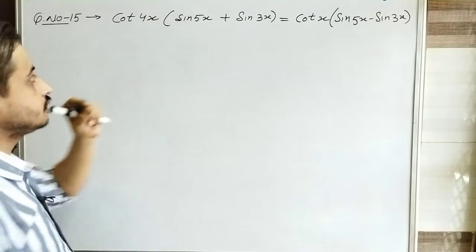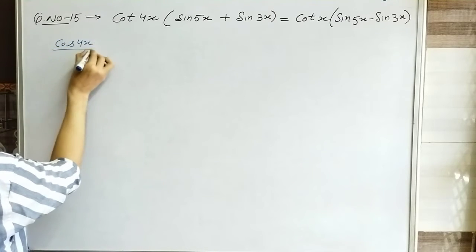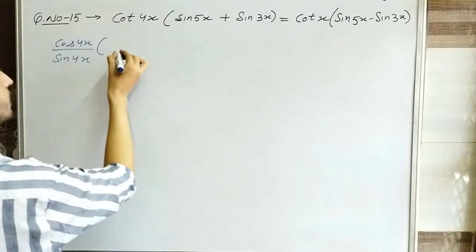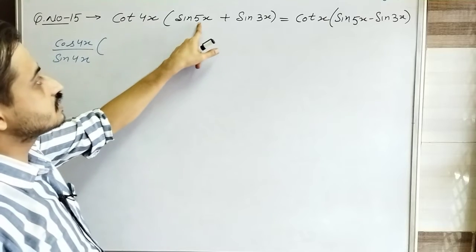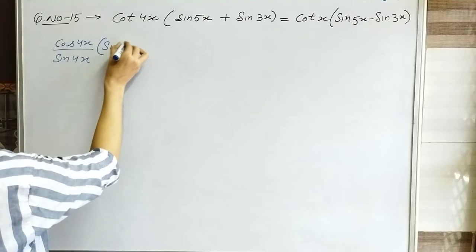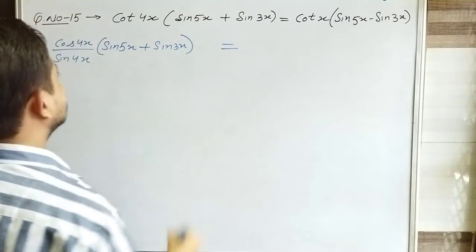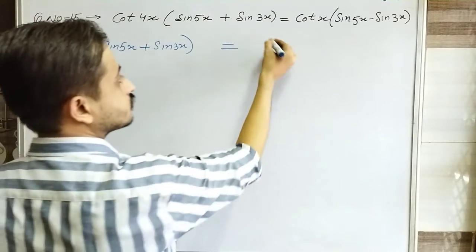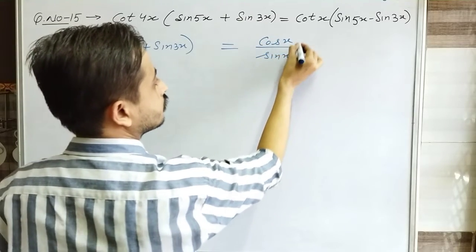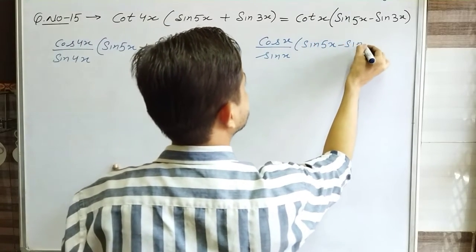Here I will apply the same concept. First, cot4x can be written as cos4x/sin4x. Inside the bracket we have sinC + sinD, so I'll write that as is and apply the identity at the last step. On the right side, cotx = cosx/sinx, and the term sin5x - sin3x remains as is.